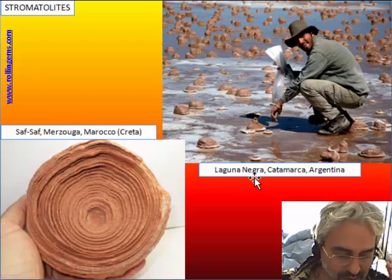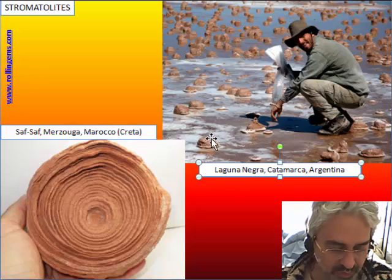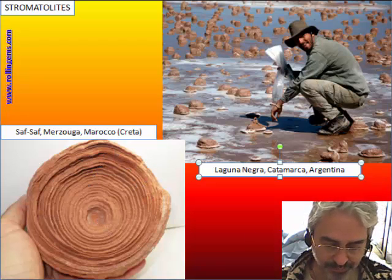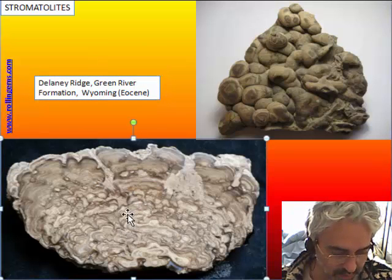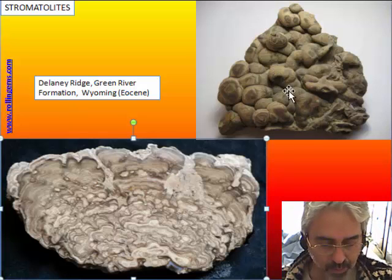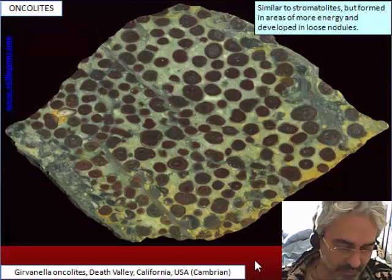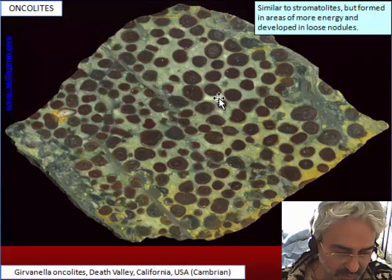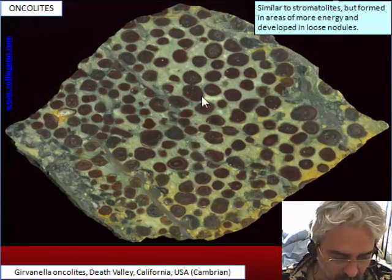This is another place where stromatolites are found — in a salt lake in Argentina — with a small half-dome shape. A similar-shaped specimen from Morocco is a fossil one. Stromatolites from Wyoming have a similar banded structure, but in some cases they form lobes and are called oncolites. Oncolite is a term better used when the stromatolites are loose — like small nodules with banding around the whole shape.